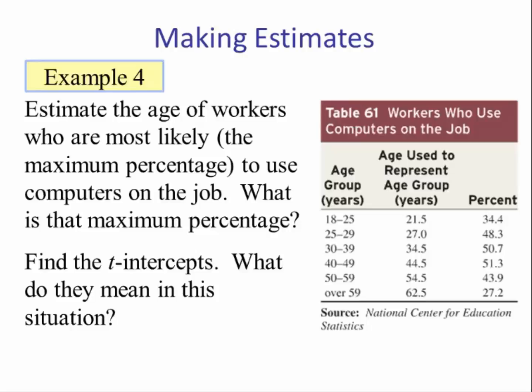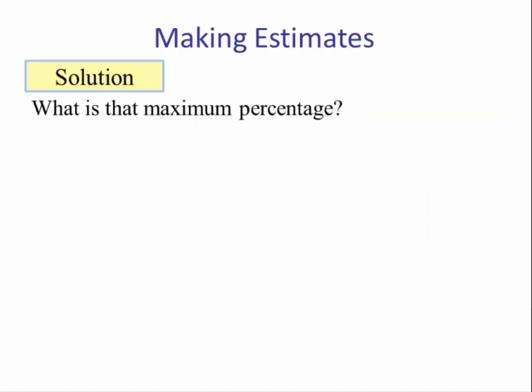Next question: estimate the age of the workers who are most likely, which means the maximum percentage, to use a computer on the job. What is this maximum percentage? Then find the t-intercepts. What do they mean in this situation? So what is the maximum percentage means find the vertex.